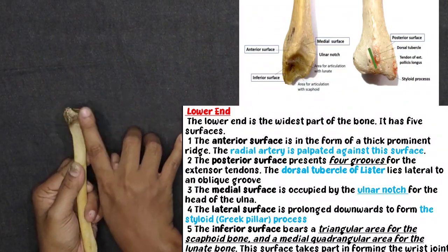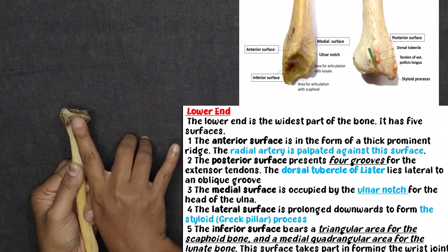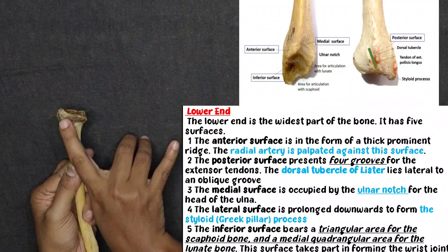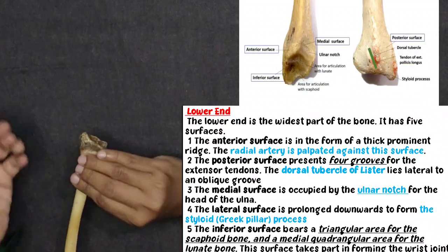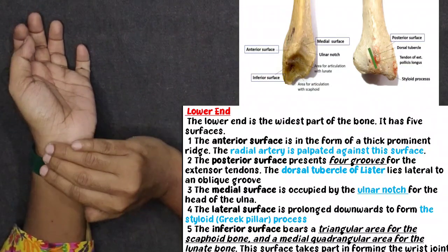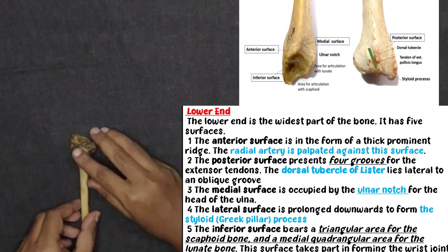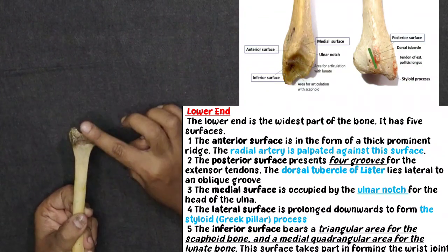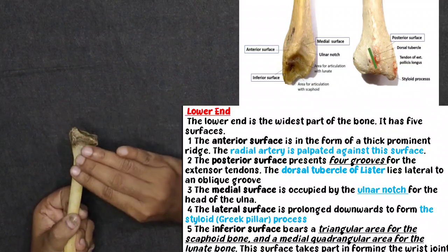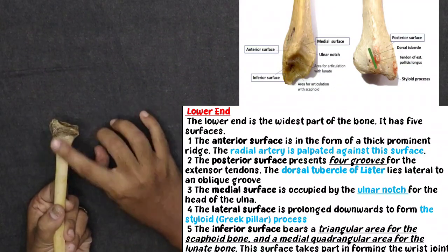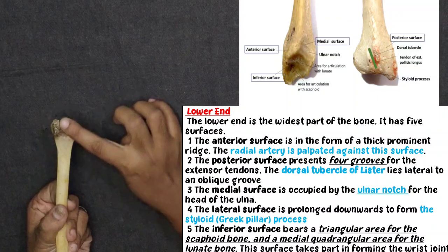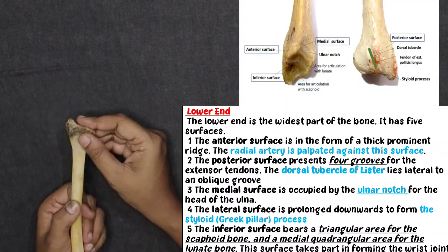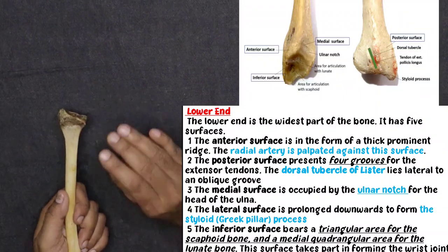On the anterior surface of the lower end, there is a rough edge. The radial artery passes here, so the radial pulse can be felt at this location. This smooth area on the anterior surface is where you can identify the radial pulse.